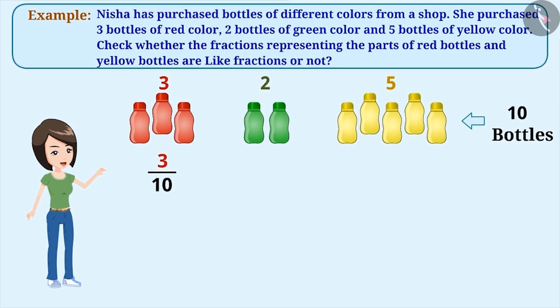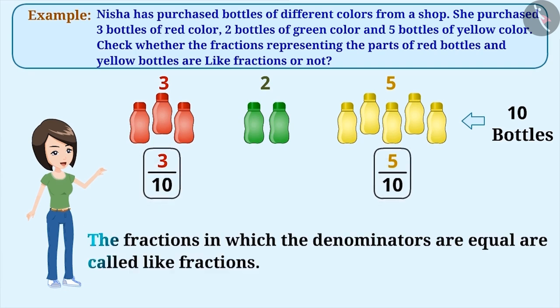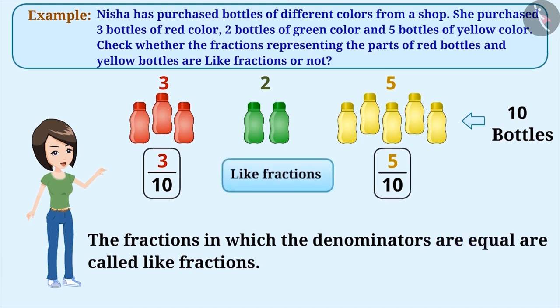Similarly, yellow will be five by ten. Here, you can see that the denominators in both fractions, three by ten and five by ten, are equal, that is, ten. The fractions in which the denominators are equal are called like fractions. Therefore, three by ten and five by ten are like fractions.